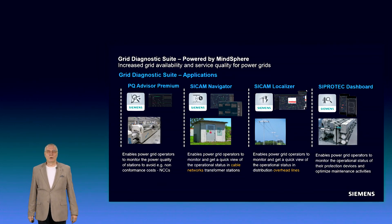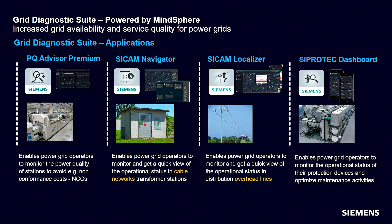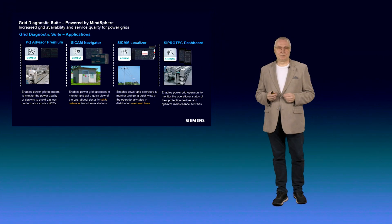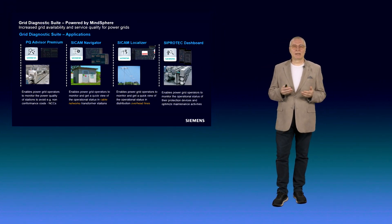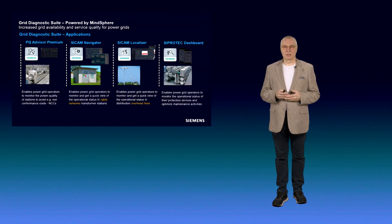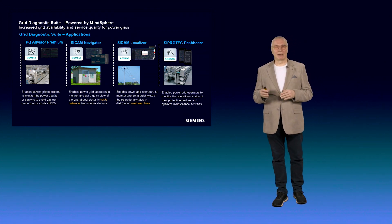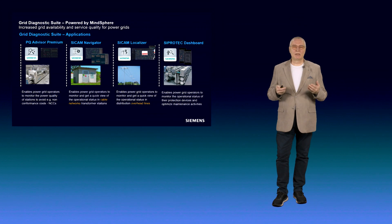I'd like to give you a quick overview about our Grid Diagnostic Suite cloud-based application portfolio before we go into detail. Currently, we offer the PQ Advisor Premium, focusing on power quality of utility and industry applications to avoid, for example, non-conformance costs, as well as to guarantee an optimum power quality for demanding manufacturing processes. For distribution grids, we designed the C-CAM Navigator to support grid operators monitoring the operational status in cable networks and transformer substations. Especially for overhead line distribution grids, with their challenges due to network design and pole-top-mounted transformers, the C-CAM Localizer is optimized to handle those requirements. Now we will have a closer look at the C-Protect Dashboard, which is the main topic of today's talk.